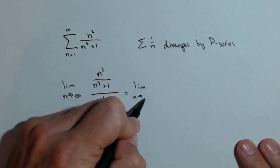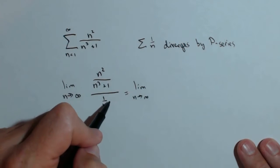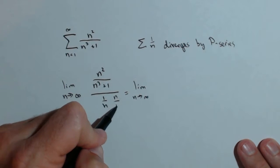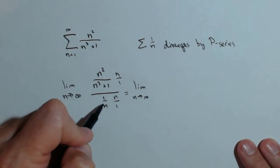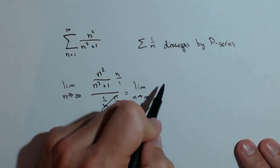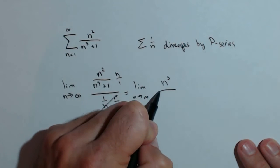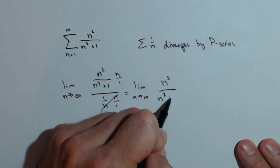Limit as n goes to infinity. When we flip this, we can think of it as multiplying by n over 1 on top and bottom. We're going to end up with n cubed over n cubed plus 1.